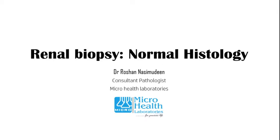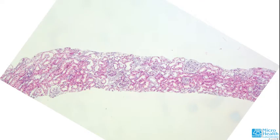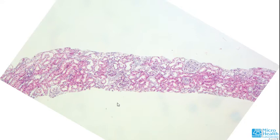Usually the cores are around 1.5 centimeters. At scanner power we can appreciate the globular structures — that is the glomeruli — and the pinkish color of the proximal convoluted tubule, which appears very eosinophilic in H&E stain. The PAS stain gives a much darker, magenta-like color and stains the basement membranes very well, as does the silver stain like JMS.